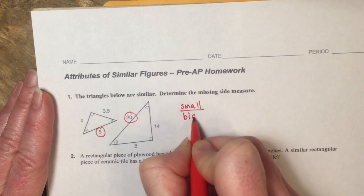Alright, a rectangular piece of plywood has a length of 14 inches and a width of 19.6 inches. A similar rectangle and a piece of ceramic tile has a length of 2 inches. What's the width of the piece of tile? So I can see that we're repeating length and width, and I'm solving for width, so those are the words I'm going to use. The length and the width.